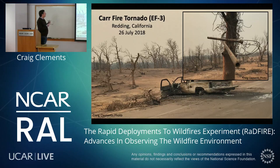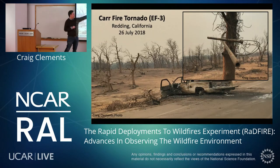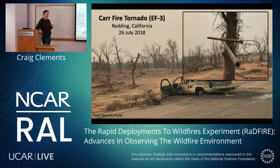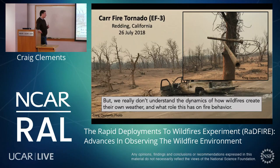To give some framework, think about the Car Fire tornado — the EF3 that formed on the Car Fire in 2018. We visited the site, invited by the Forest Service. Here's a gas line wrapped around a tree — complete devastation. A pyrocumulonimbus went to 40,000 feet and stretched this column up. There's a paper by Neil LaRoe and colleagues that analyzed that event. We still don't have a great understanding of the dynamics of how wildfires create their own weather and what role this has on fire behavior — that's the focus of our research program.